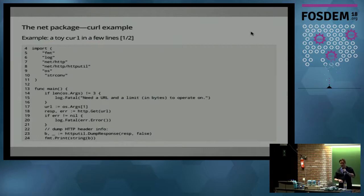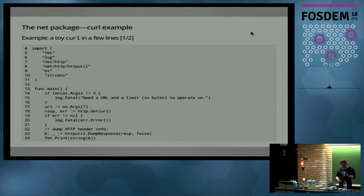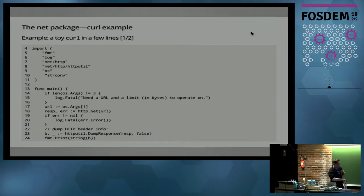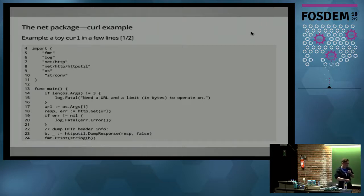The first example we're going to look at is a mini curl — really just a few lines of code. Essentially we do an HTTP GET with the URL provided as an argument, and then use httputil.DumpResponse to just have a look at the result.